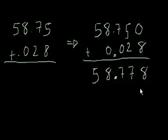And it's always good to do a reality check to say, well, does my answer make sense? I have 58.75, so roughly 58, almost 59, 58 and 3 quarters. And I'm adding a very small number to it. I'm adding 0.028. So my answer shouldn't change much. It should still be around 58 something, because I'm only adding a very small amount.